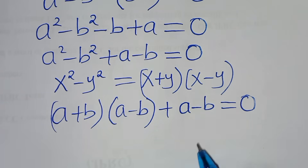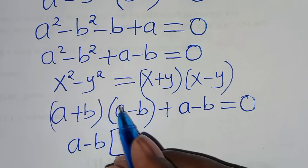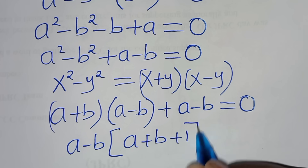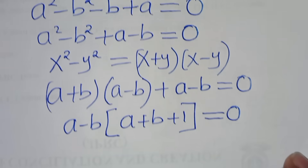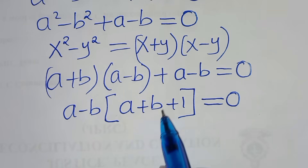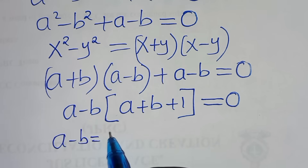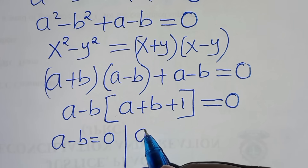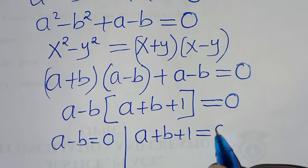A minus b is common, so we factor out (a minus b), giving (a minus b)(a plus b + 1) equals 0. We have two parts: the first part is a minus b equals 0, and the second part is a plus b plus 1 equals 0.